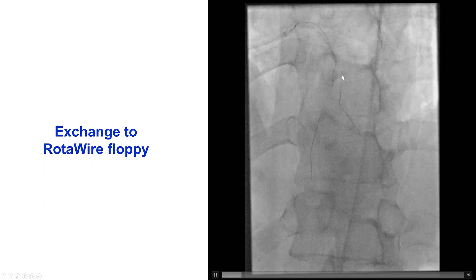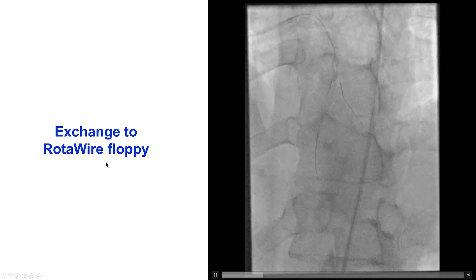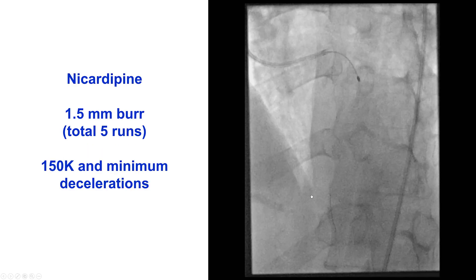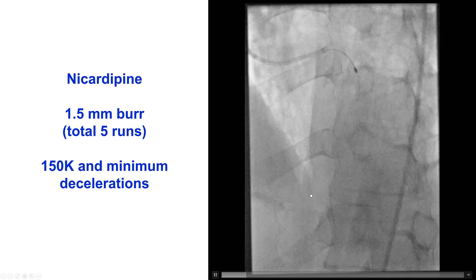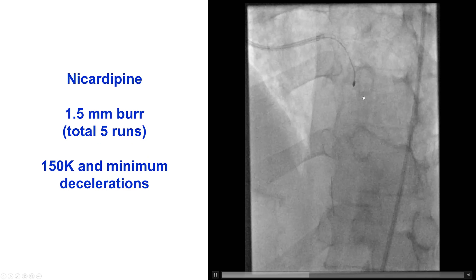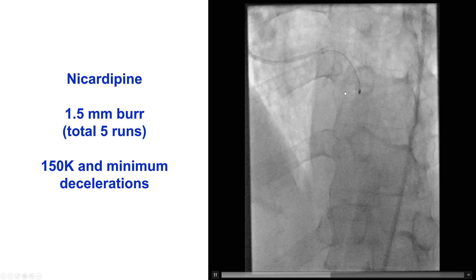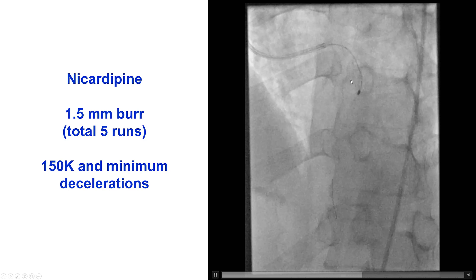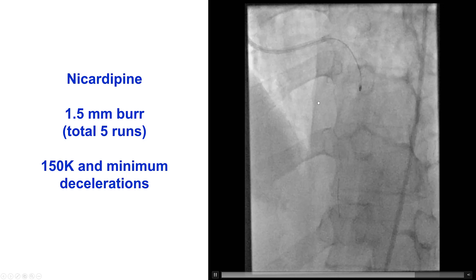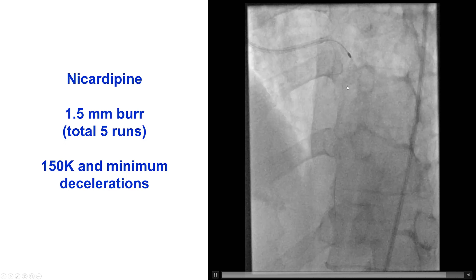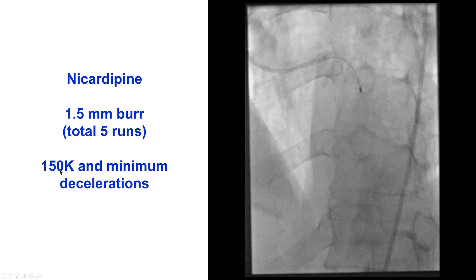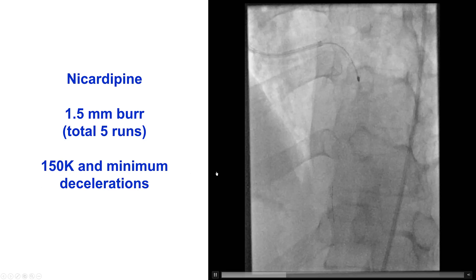In this case, since we were able to advance the Caravel, we reinserted it and advanced a Rotawire Floppy into the distal LAD. We gave a vasodilator first — nicardipine — no pacemaker, as it was the LAD. We then performed a few runs of rotational atherectomy with a 1.5 mm burr, which is preferred as the risk of entrapment is low, at 150,000 RPM with minimal decelerations.